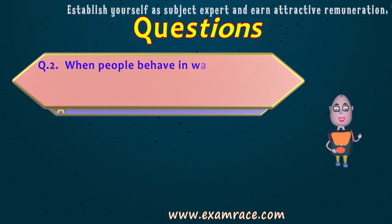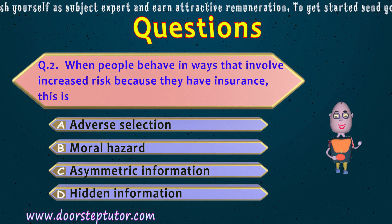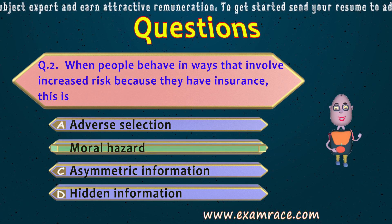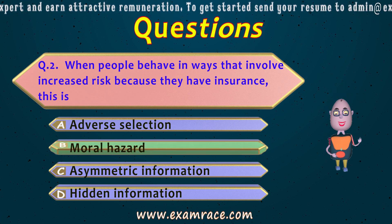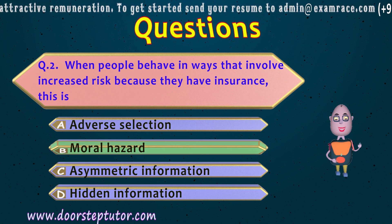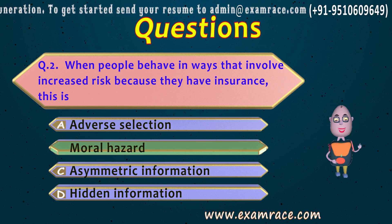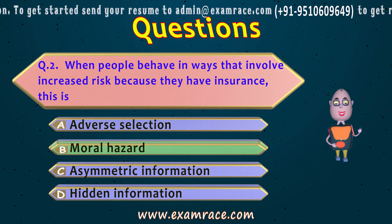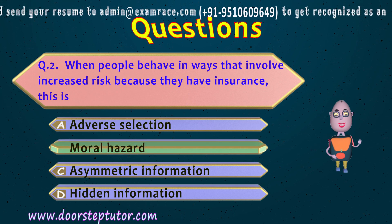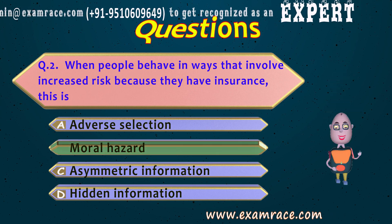The second question: when people behave in ways that involve increased risk because they have insurance, this is known as — option B — moral hazard. Moral hazard is when people change or alter their behavior to involve increased risk because they know the cost does not have to be borne by them, as they are insured against any risk or casualty.